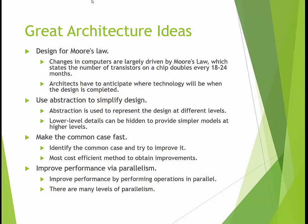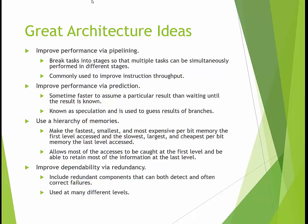Fourth, improved performance via parallelism — think of multiple CPUs. There are many versions and levels of parallelism. Fifth, improved performance via pipelining: similar to parallelism, we try to line up tasks and stack them. We break tasks into stages so that multiple tasks can be done simultaneously in different stages, commonly used to improve instruction throughput and often used in conjunction with parallelism. Sixth, improved performance via prediction — sometimes it's faster to assume a particular result rather than waiting until the result is known, especially if it's a very common result.